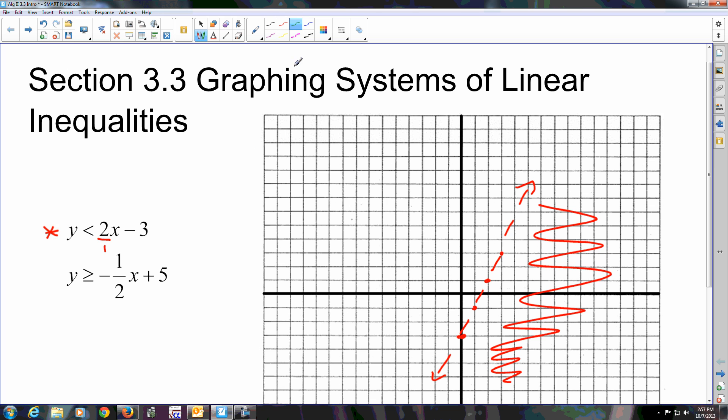Choose a different color here. Graph this one. Your y-intercept is 5: 1, 2, 3, 4, 5. Slope is negative 1 half. Down 1, right 2. Down 1, right 2. Down 1, right 2. This time the line is solid because it has the equal sign with it. There you go. And it says y is greater than, so you shade above it.